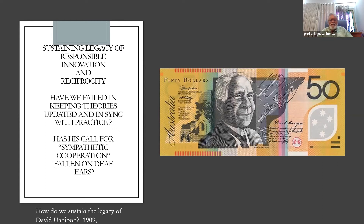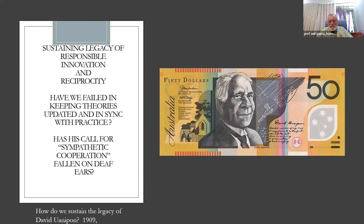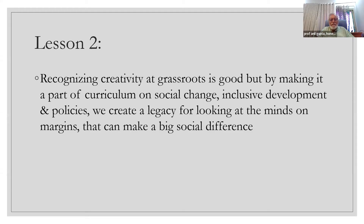He talks in one of his writings about sympathetic cooperation — cooperation between blacks and whites, between indigenous and other immigrants. He wanted you to understand his problems, where he came from and how he discovered this — and he would understand your problems because you came with a different background, and we should both respect and reciprocate. The second lesson is that recognizing creativity is good, but making it part of the curriculum on social change, inclusive development, and policies is important. We must create a legacy for looking at minds on the margin that make a big difference — this must become part of our second nature, the indoctrination process of a responsible citizenship.